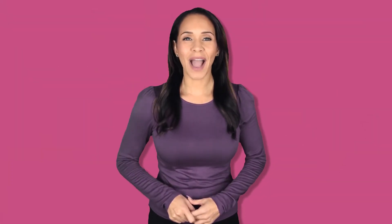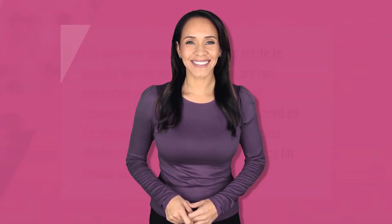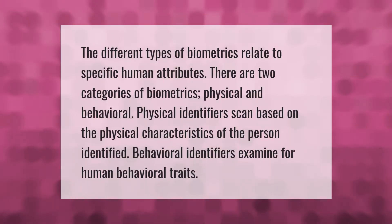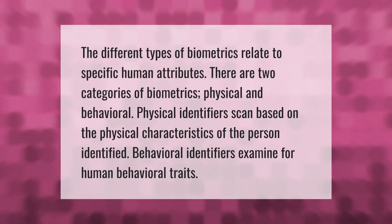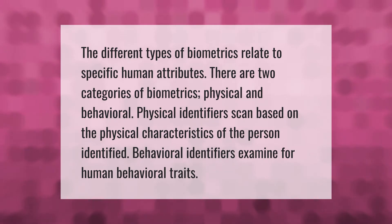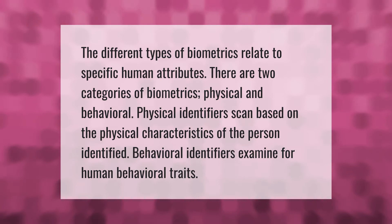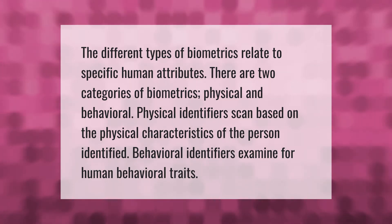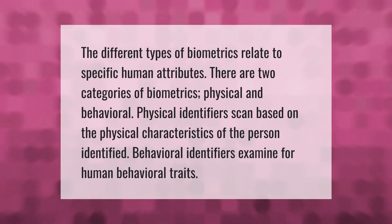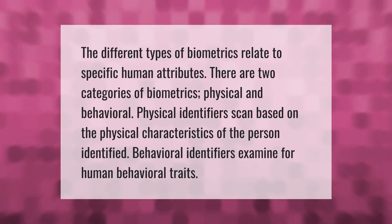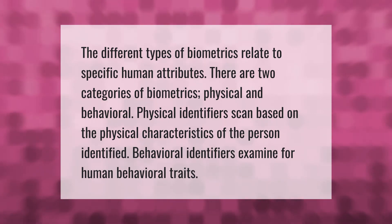The different types of biometrics relate to specific human attributes. There are two categories of biometrics: physical and behavioral. Physical identifiers are scan-based, relying on the physical characteristics of the person identified. Behavioral identifiers examine human behavioral traits.